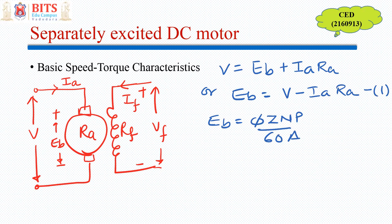We also know that back EMF depends on flux, number of conductors, speed, number of poles divided by 60A, where A is a winding constant. In short, back EMF is proportional to φ times ω, where ω is in radians per second and N is in RPM. So Eb = Kb·φ·ω.